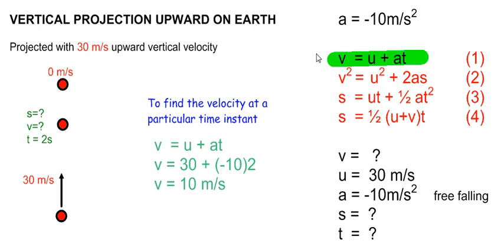To do that, we can use equation 1, substitute with the initial velocity to be plus 30, the acceleration to be minus 10, and our time of 2 seconds, and we will get a velocity of plus 10 meters per second. The plus means that it is still moving upwards.